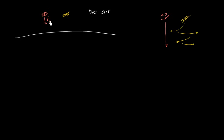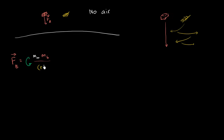The force of gravity on the brick is going to be equal to big G times the mass of the moon (M with subscript lowercase m for moon), times the mass of the brick, divided by the distance between the brick and the center of the moon squared. That's the force on the brick.